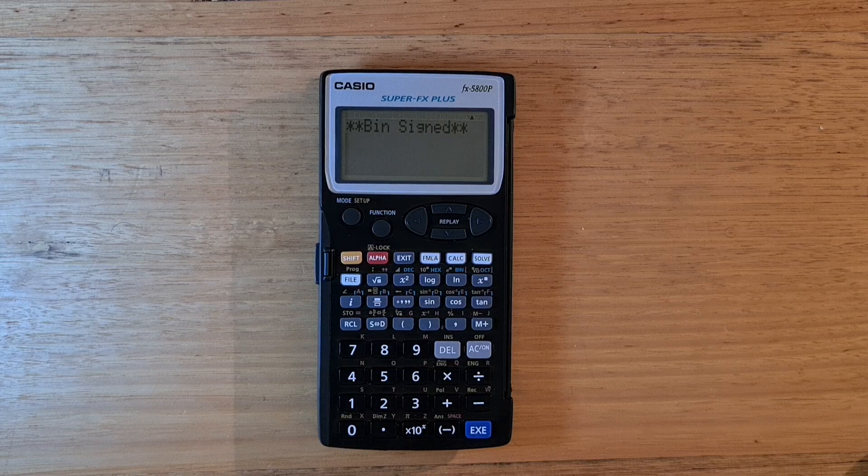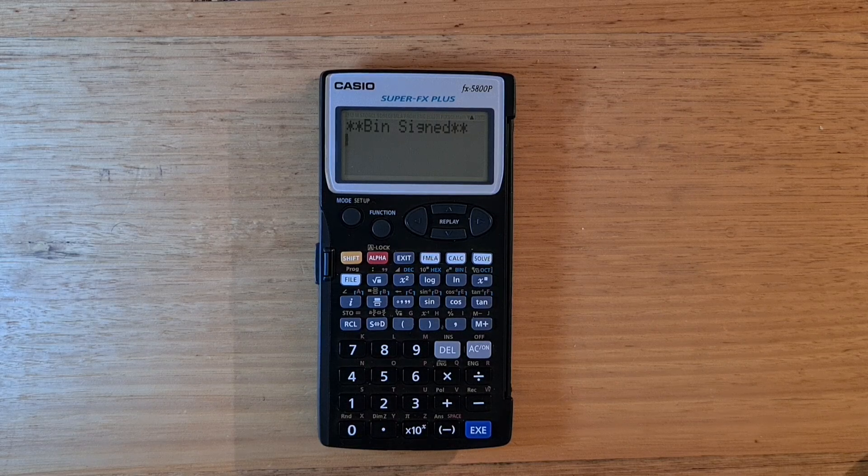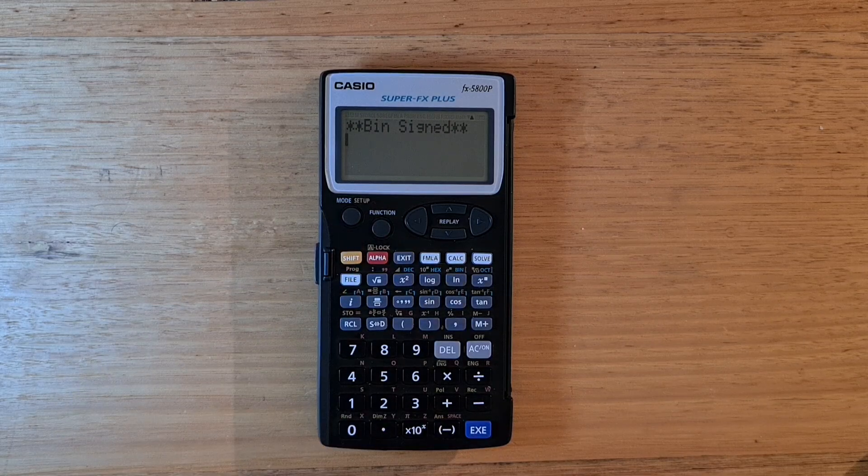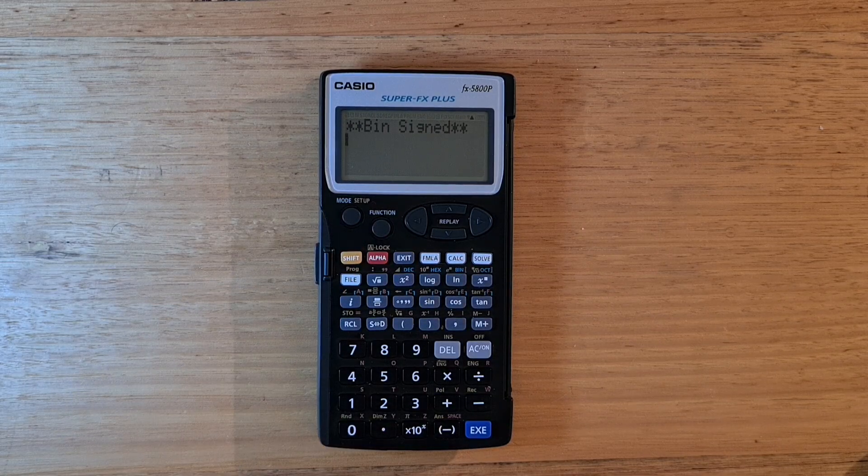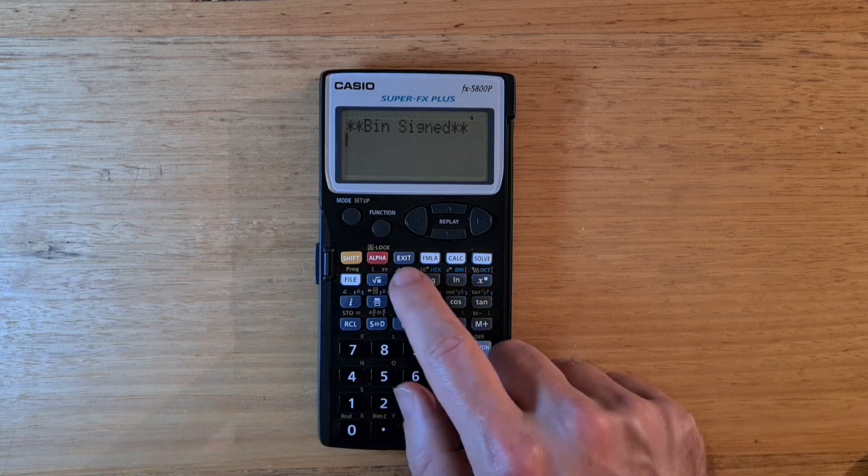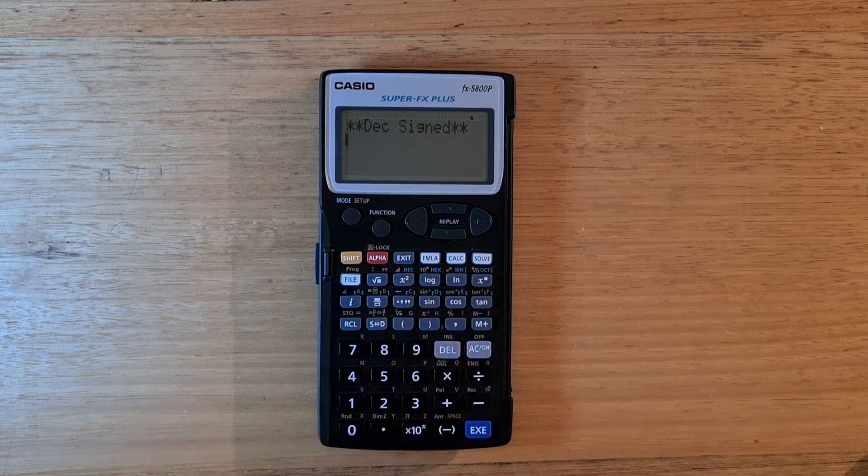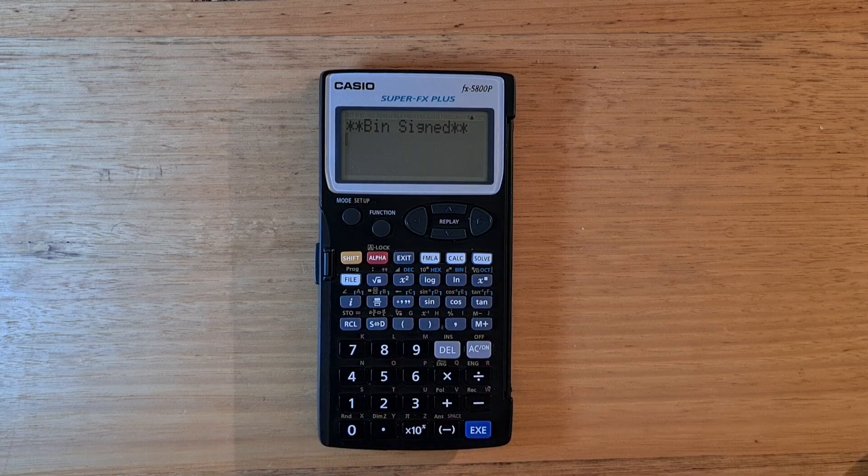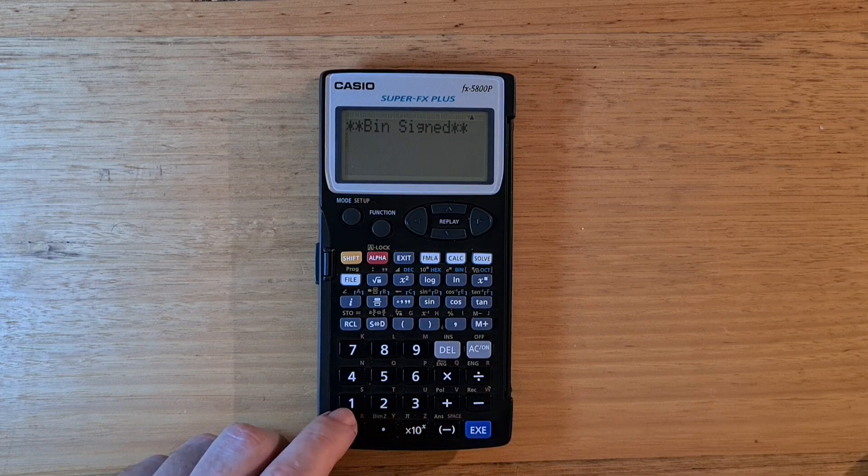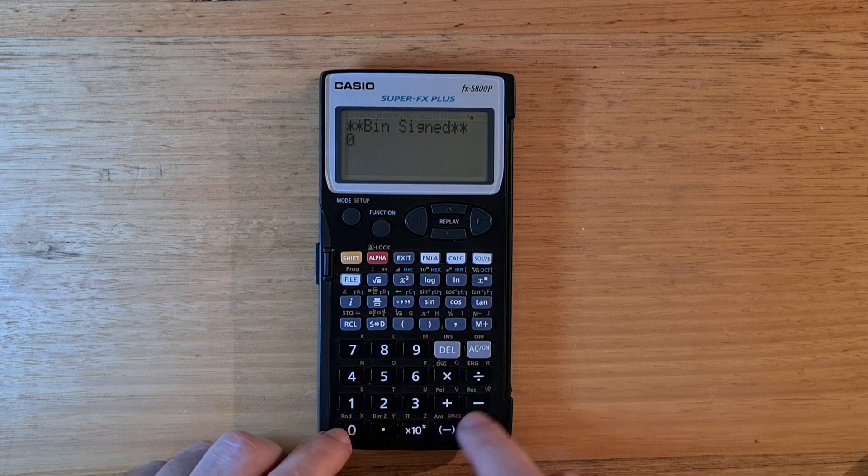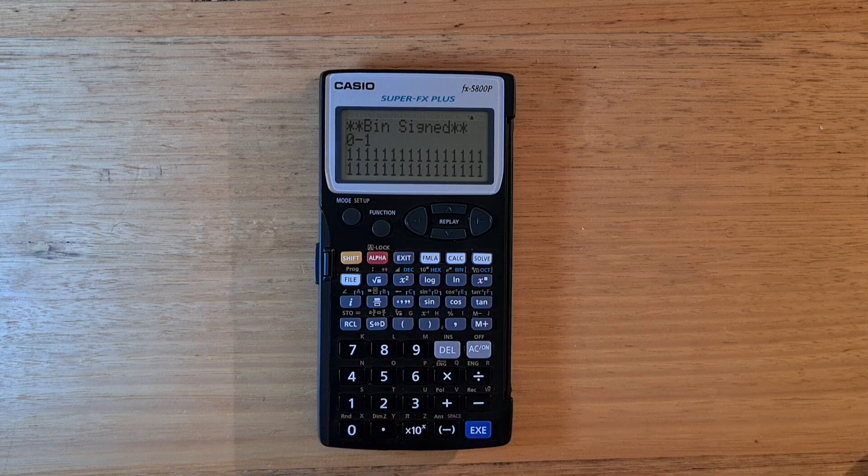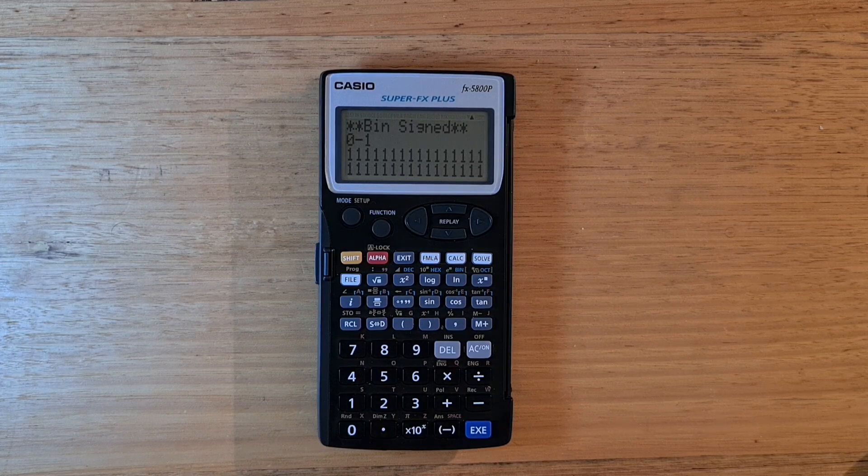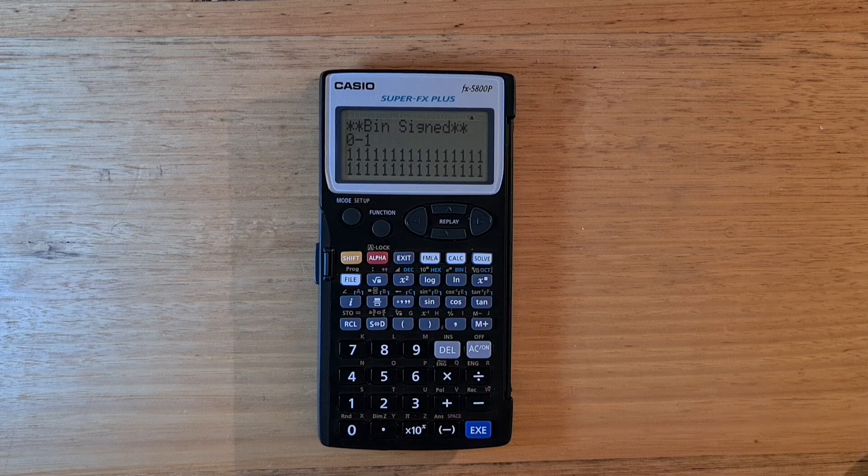And the 5800P supports basic calculations. And to get there, you hit mode 2. And here you can easily switch bases using these three keys. So let's switch to binary now. And let's say we'll go 0 minus 1.